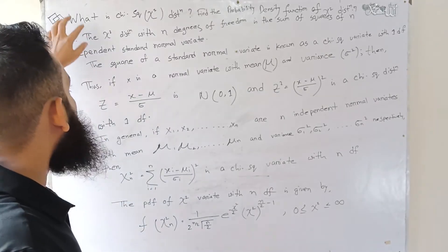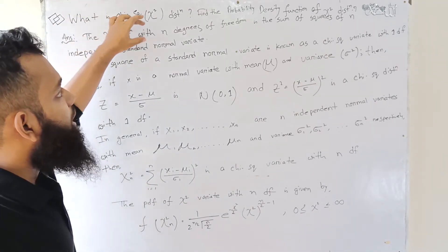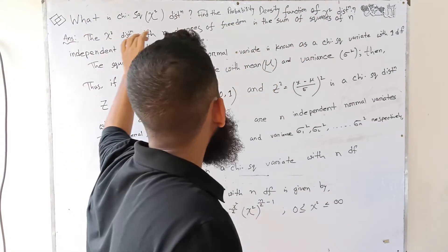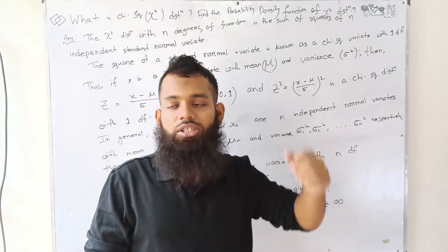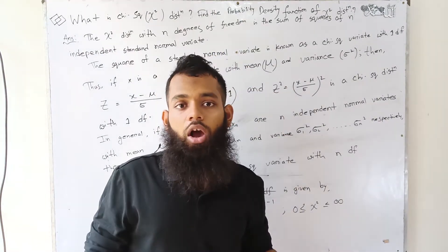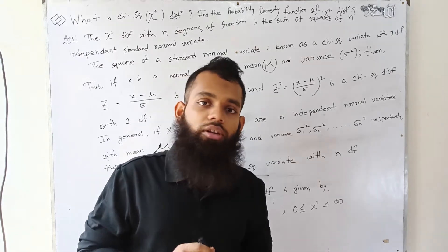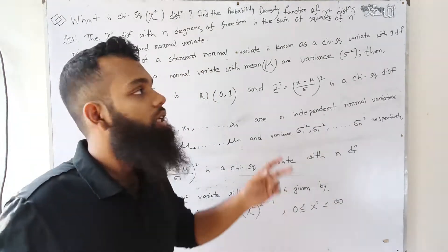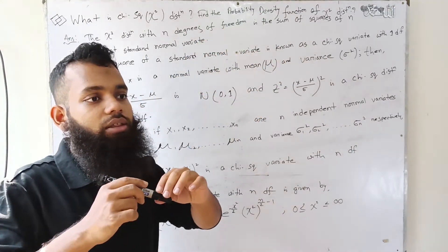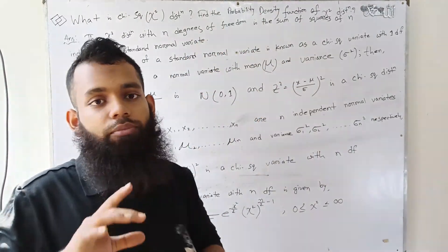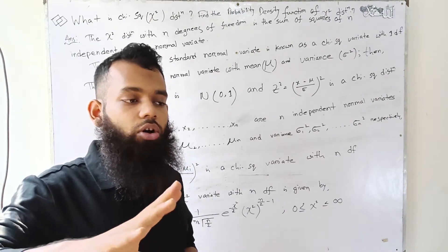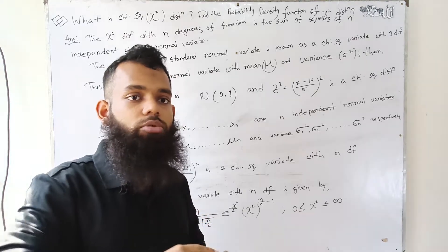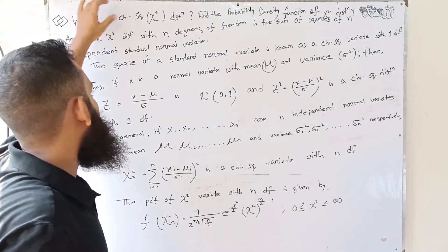The Chi-square distribution with n degrees of freedom is the sum of squares of independent standard normal variates. We will look at standard normal variates — each one is squared, and the sum of those squares is nothing but the Chi-square distribution.